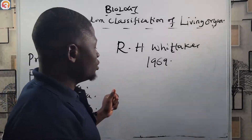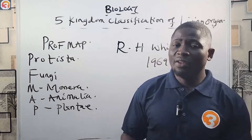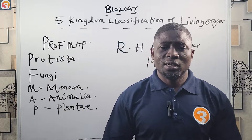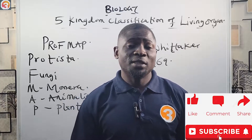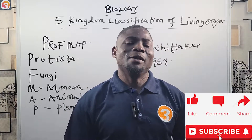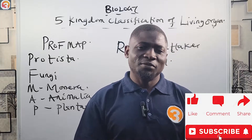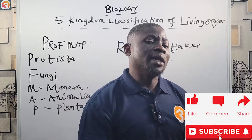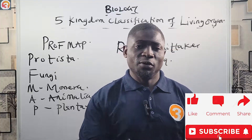So this is the modern system of classification of living organisms — the five kingdom classification as put forward by R.H. Whittaker in 1969. If you know this acronym, it will be easy to remember. Please make sure you have liked this video, subscribed to the channel, and shared the videos. Activate your JAMB app to get the full benefits, and I'll see you in the next episode. Thanks for watching.